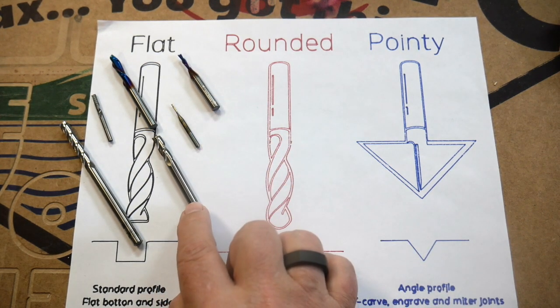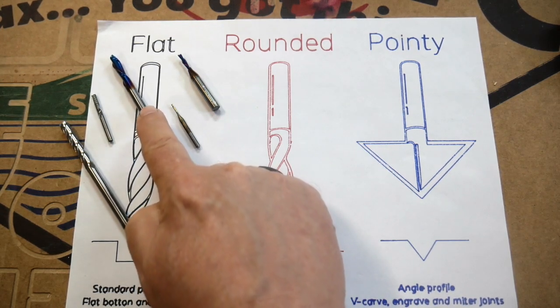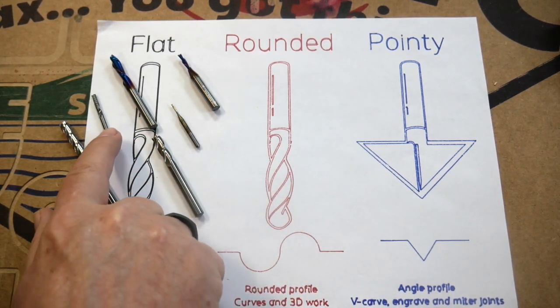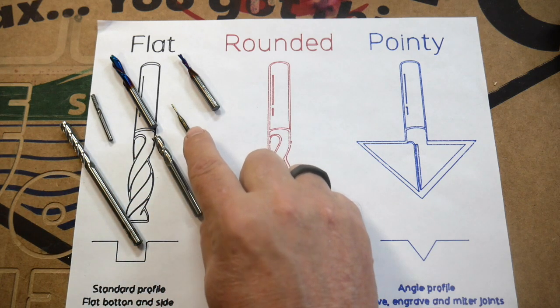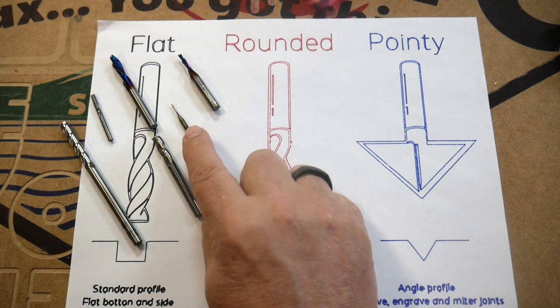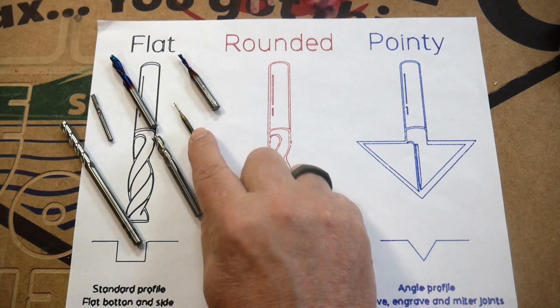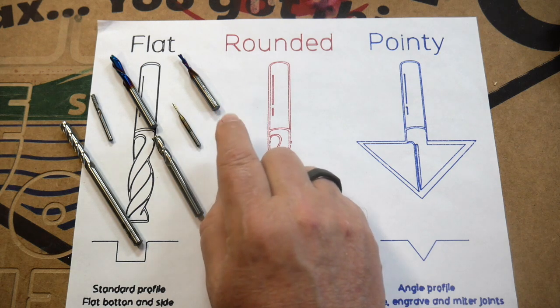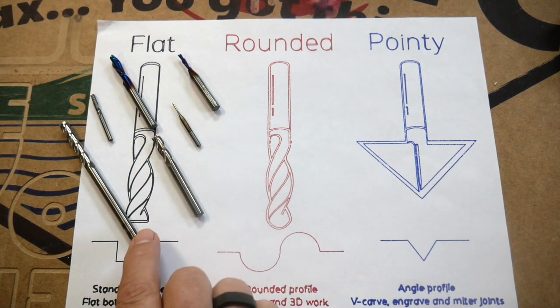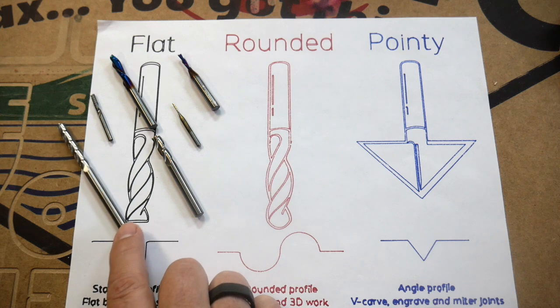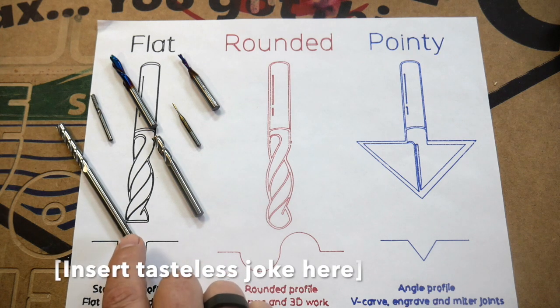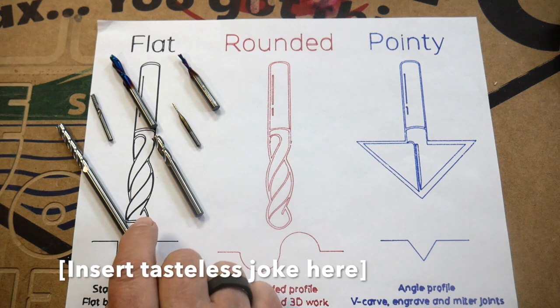These two here are quarter inch bits. This is actually another eighth inch bit that is intended for acrylic. They go down really, really small. This is a one millimeter bit that I use for PCB boards. You can get even huge ones like this one I got from McMaster-Carr, which is also a quarter inch bit. It just happens to be a particularly long one for getting down inside of deep areas if I need to.